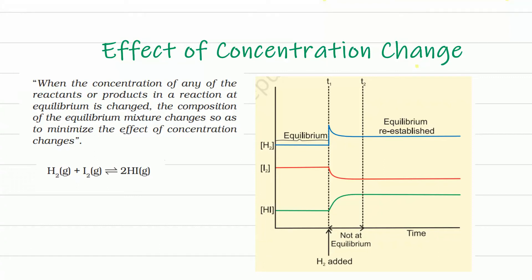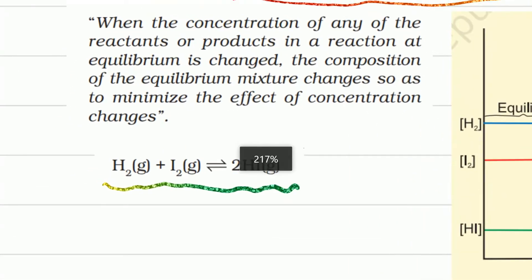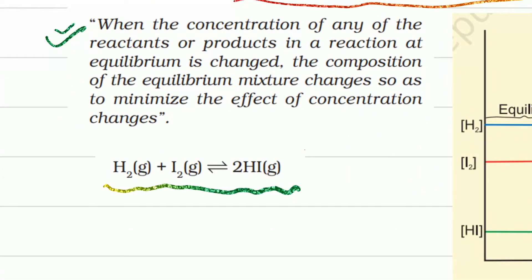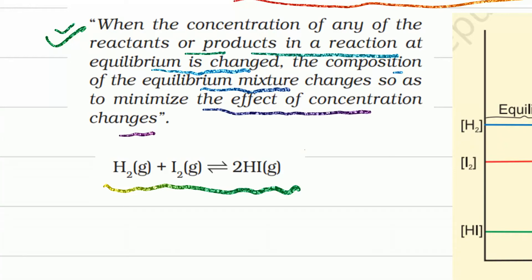Effect of concentration change: Let us suppose we have a reaction in which hydrogen combines with iodine to form HI (gaseous reaction). According to Le Chatelier's Principle, if the concentration of any of the reactants or products in a reaction at equilibrium is changed, the composition of the equilibrium mixture changes so as to minimize the effect of concentration changes.